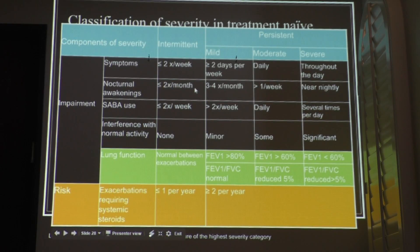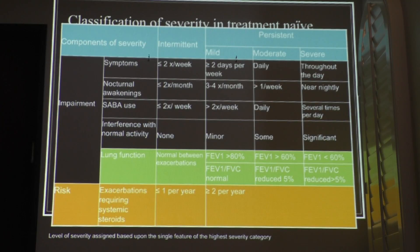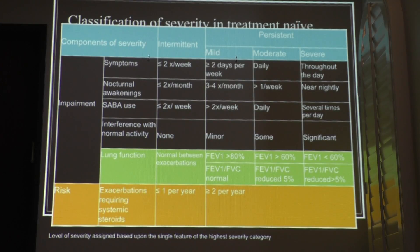Mild asthma is more than two days per week. Moderate asthma is daily. Severe asthma — these patients have asthma throughout the day, non-stop. We also ask about nocturnal awakenings, because asthma is more prominent in the evenings — always ask what about at night. You can also define severity depending on use of the selective beta agonist: if they use it rarely, it's intermittent; more than twice a week is mild; daily is moderate; multiple times a day is severe.